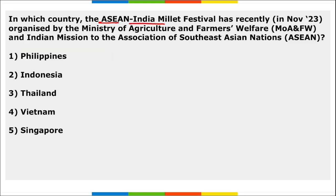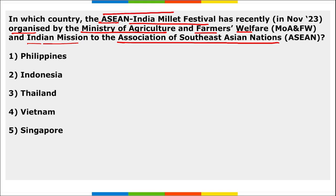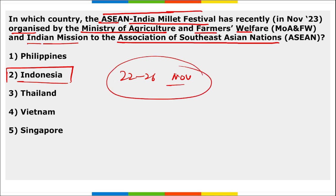In which country was the Asian India Millet Festival recently organized by the Ministry of Agriculture and Farmers Welfare and the Indian mission to ASEAN? The Asian India Millet Festival was organized in South Jakarta, Indonesia, from 22nd to 26th November. The aim of the festival is to raise awareness and create a market for millets and millet-based products. 2023 is also the International Year of Millets.